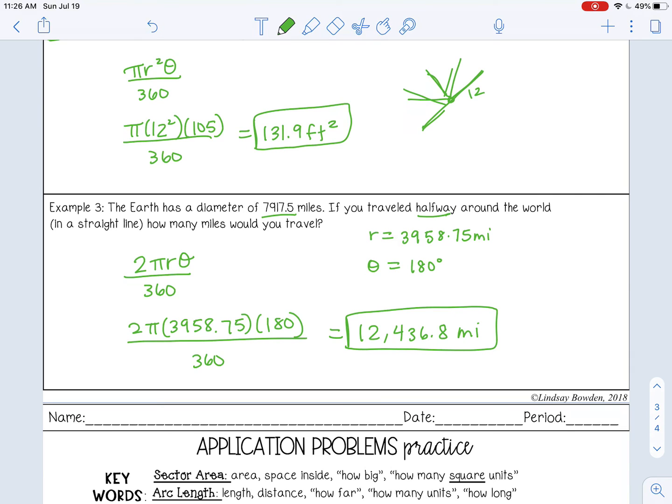Now, there are other ways to do some of these problems. For example, on the last one, I could have just found the circumference of the whole Earth and divided it by two. So there are multiple ways. If you want to do it another way, that's fine. Just check your answer and make sure you get the same thing. You can go ahead and stop this video now and complete application problems practice and check it with your teacher. Thank you.